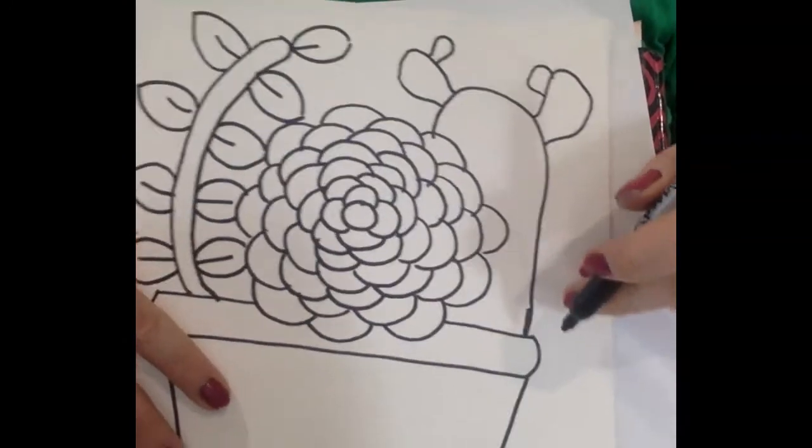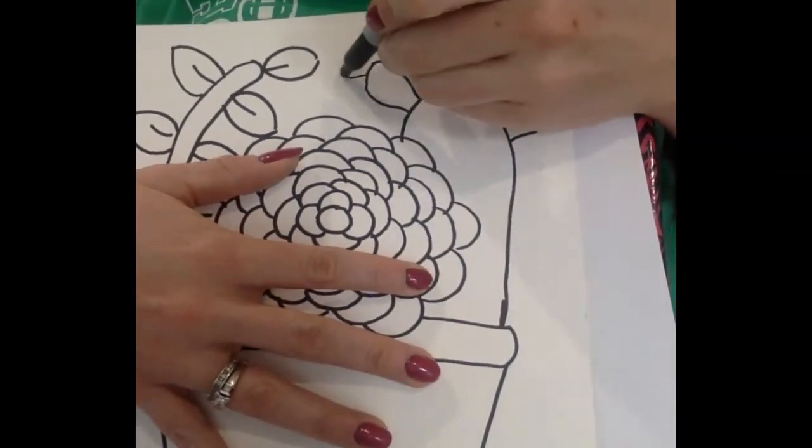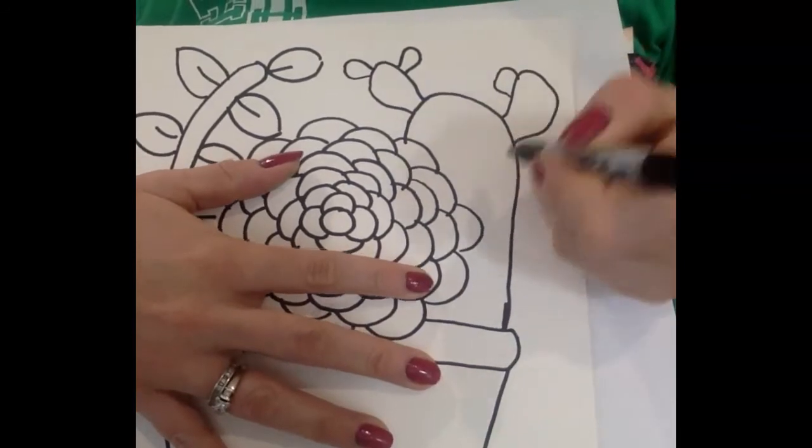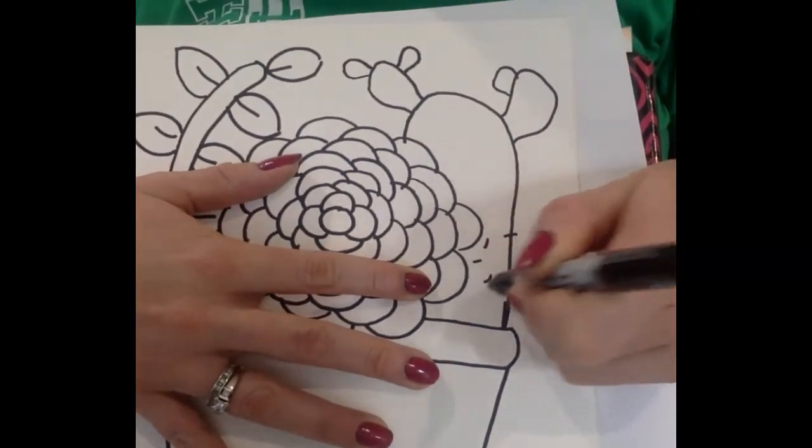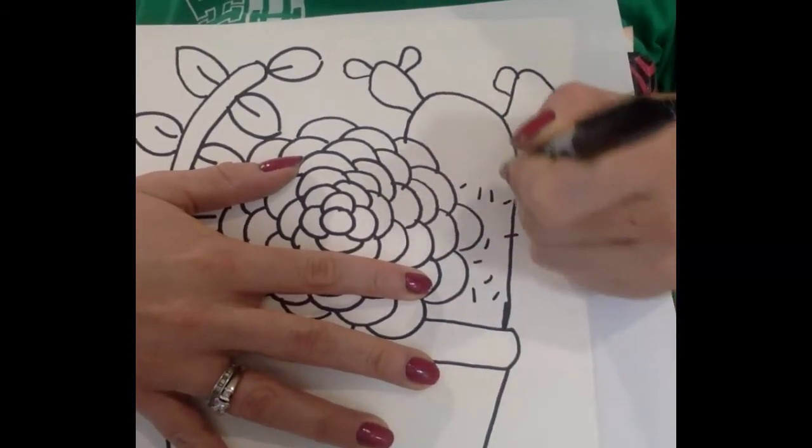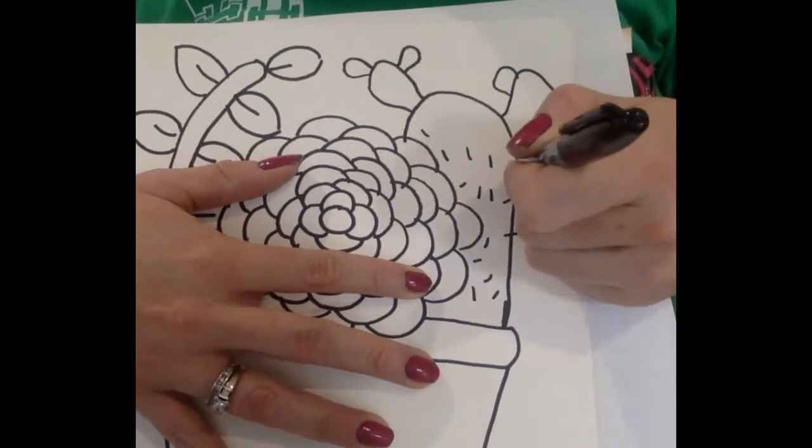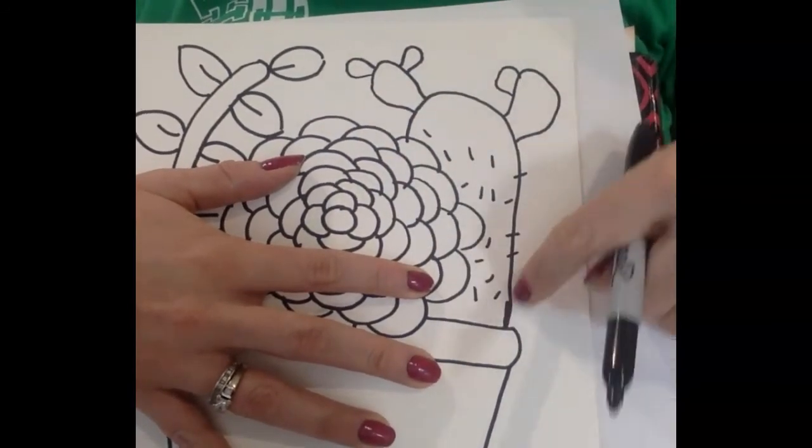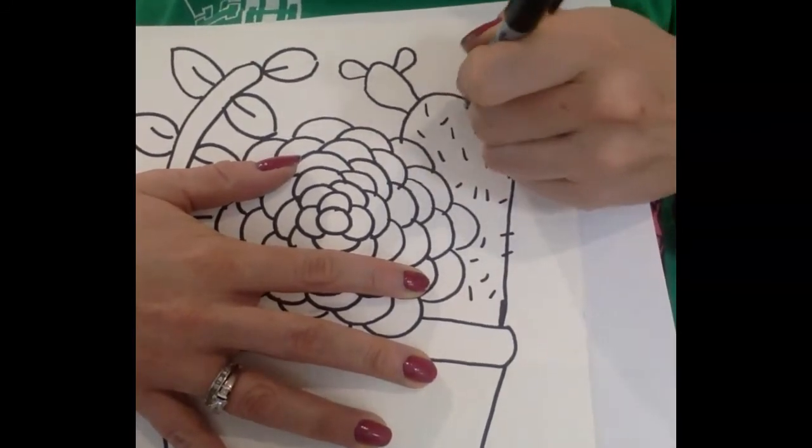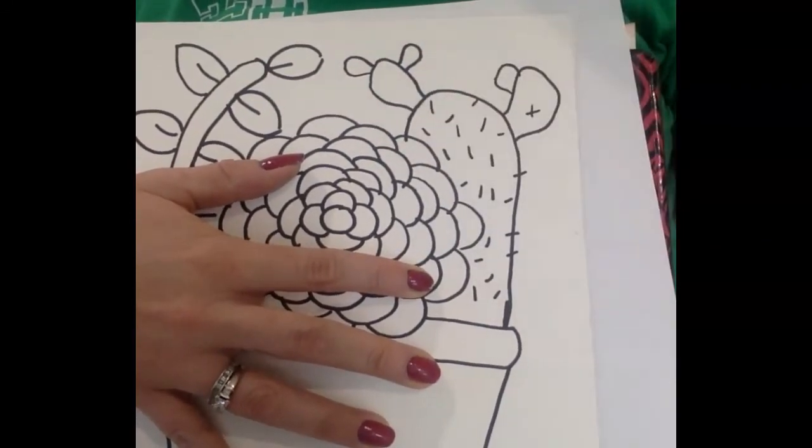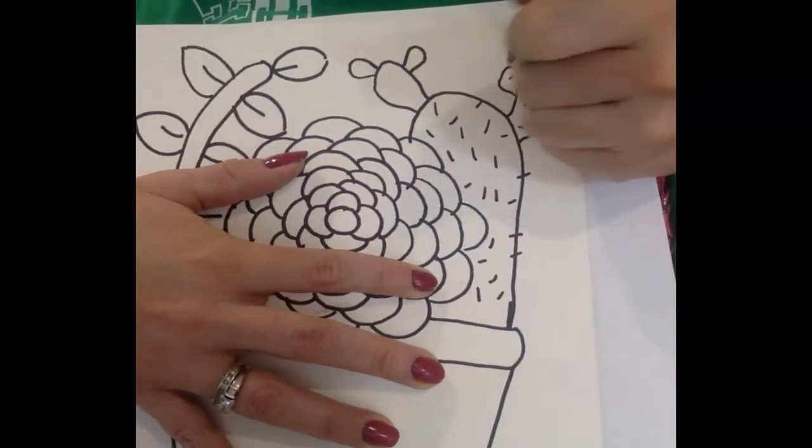And then to really make it look like a cactus, because it just looks like it has ears right now, I want to make some little things that look like prickers. There's a couple ways you can do that. I think it looks good if you just go through and make tiny little marks like that. That looks like it has little prickers. I would make some that stick off of the edge like that to give it more of that cactus look. Just like that. You can also do some that are like that, like an X.